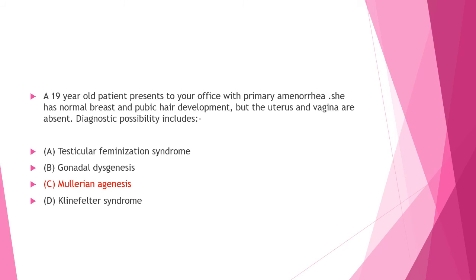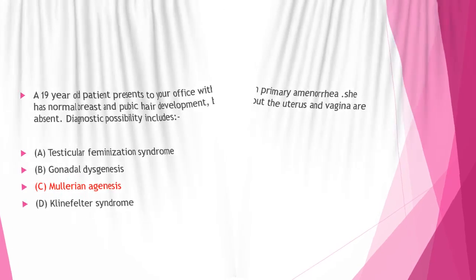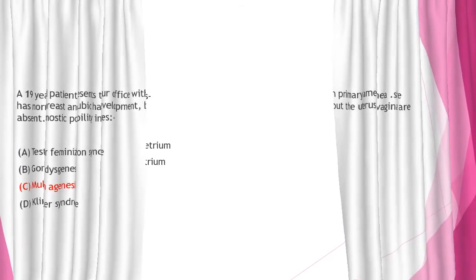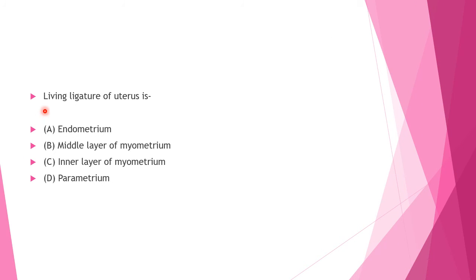Next question: Living ligature of the uterus is — Option A: endometrium, Option B: middle layer of myometrium, Option C: inner layer of myometrium, Option D: parametrium. Answer to this question is Option B: middle layer of myometrium.